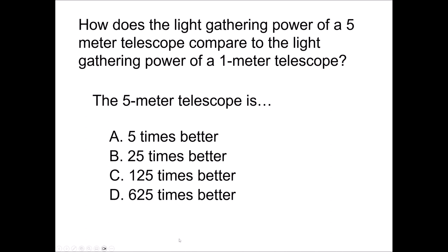Here's a question: if you want to compare the light gathering power of a five-meter telescope to that of a one-meter telescope, how would they compare? Light gathering power goes as diameter squared, so we take five squared and one squared and create a ratio — we get 25. That means the five-meter telescope has 25 times the area compared to the one-meter telescope, can collect 25 times the amount of light, and objects will appear 25 times brighter. Simple comparisons just require taking the ratio of the diameters squared.